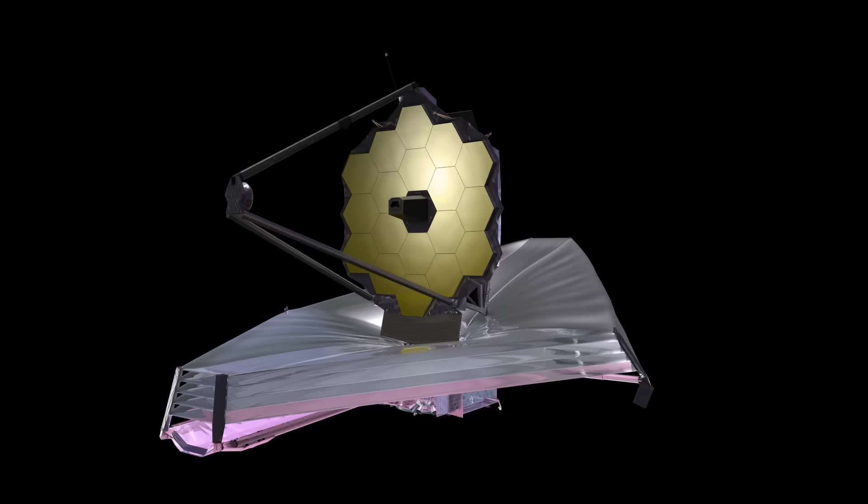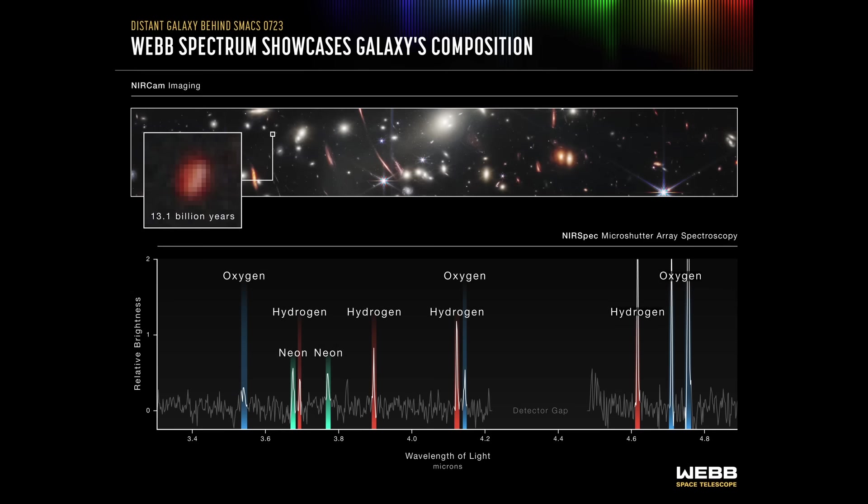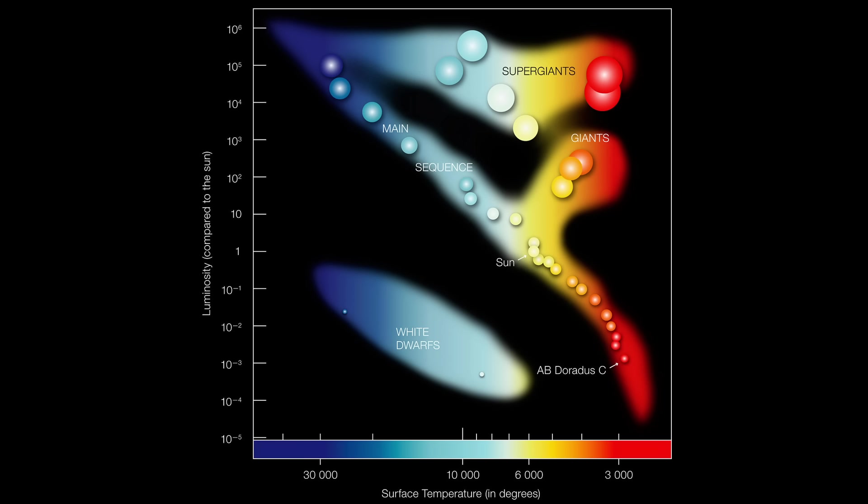The James Webb Space Telescope is equipped with many different filters to allow it to see in different wavelengths. This allows it to view the colors of distant galaxies. From this they can work out an estimate of the age of the stars within the galaxy.